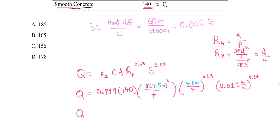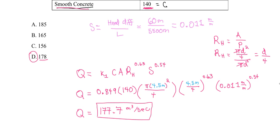Now we can solve for Q. We should get our units in cubic meters per second. Doing the math, we get approximately 177.7 cubic meters per second, so the answer is D, around 178. That's using the Hazen-Williams equation.